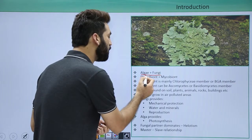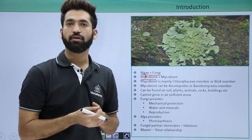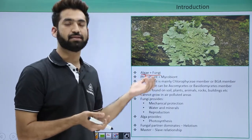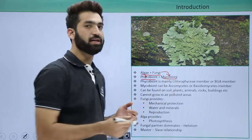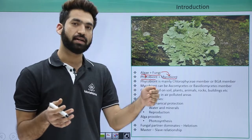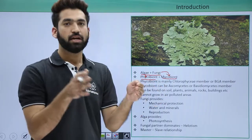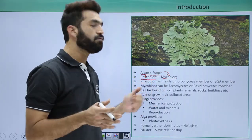The algae partner is called phycobiont. Phycology is the study of algae, hence the partner name is phycobiont. When you talk about fungus, it is called mycobiont. So you have one particular partner, fungus, which is called mycobiont. You have an algae partner which is called phycobiont.